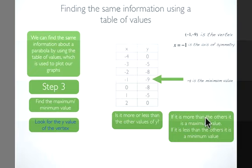Notice that all the other numbers are bigger than negative 9. This means negative 9 is our minimum value. If it is more than the others, it would be a maximum value. But, since it's less, it's a minimum value.